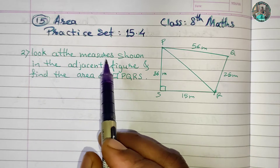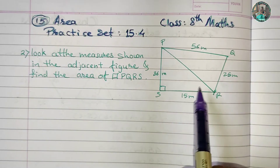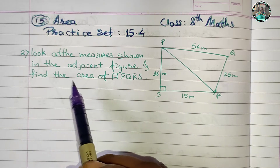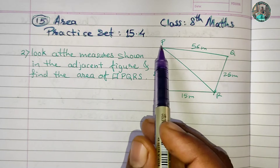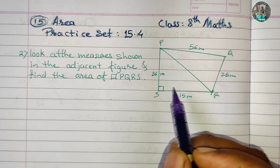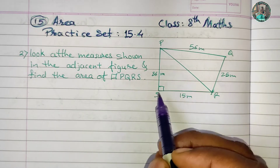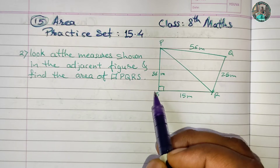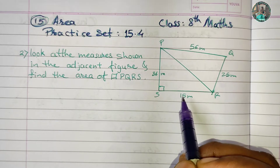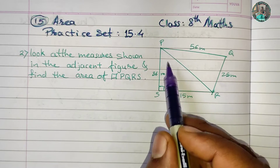Look at the measures shown in the adjacent figure. We are going to solve the quadrilateral PQRS. The angle PSR is 90 degrees. PS is 36 meters and SR is 15 meters. We are going to find the area of this figure.